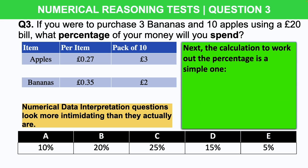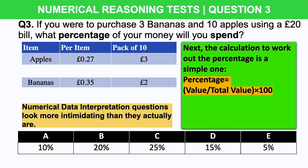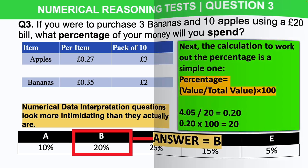Next we need to do the calculation to work out the percentage. The formula is: divide the value by the total value, then multiply by 100. So we take £4.05 and divide it by £20 (the note we're using to pay), which gives us 0.20. To turn that back into a percentage we multiply by 100, giving us 20. So the correct answer is b) 20.